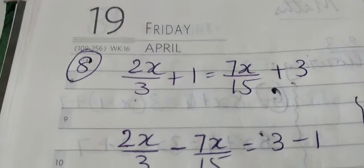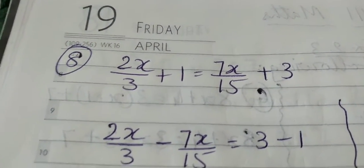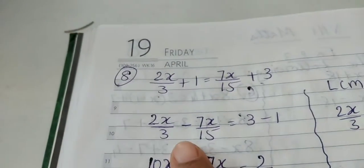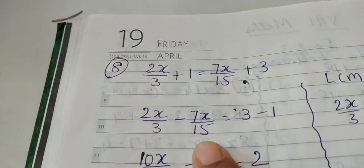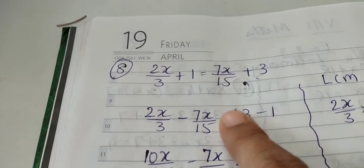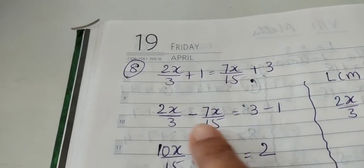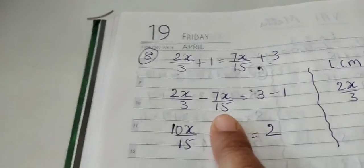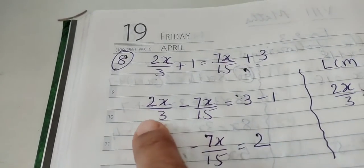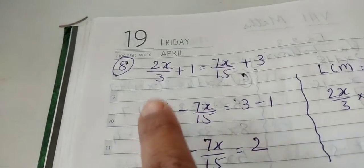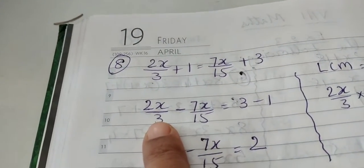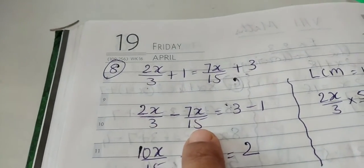Now we move on to the next sum. 2x upon 3 plus 1 is equal to 7x upon 15 plus 3. Now you have denominators, fraction numbers. Take the like terms together. 2x upon 3 minus 7x upon 15 is equal to 3 minus 1. We will leave these numbers aside, we won't disturb this. We will only calculate out the LCM between these two numbers, 3 and 15, these two denominators. And as I told you earlier, 15 is multiple of 3 and we have only two numbers where one is factor of the bigger number. Smaller number is factor of the bigger number or you can say bigger number is multiple of the smaller number. Then the bigger number is going to be the LCM. Otherwise, you have another choice where you can calculate LCM by the method of prime factorization.